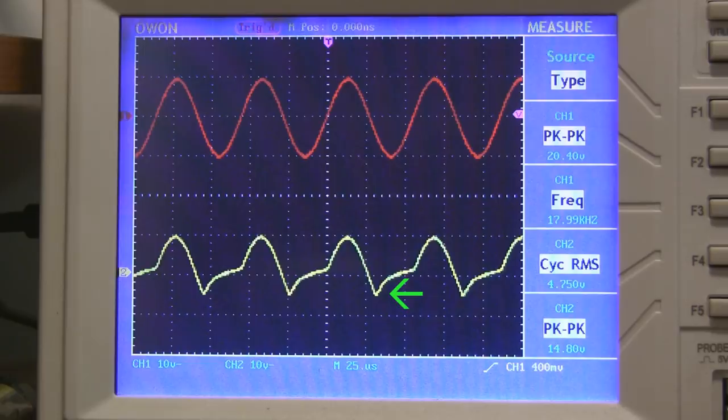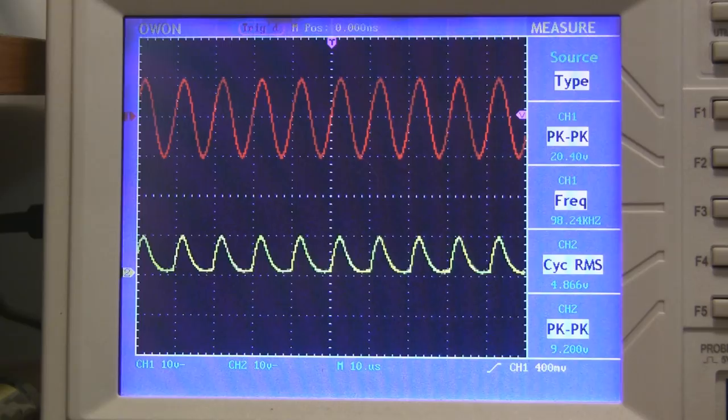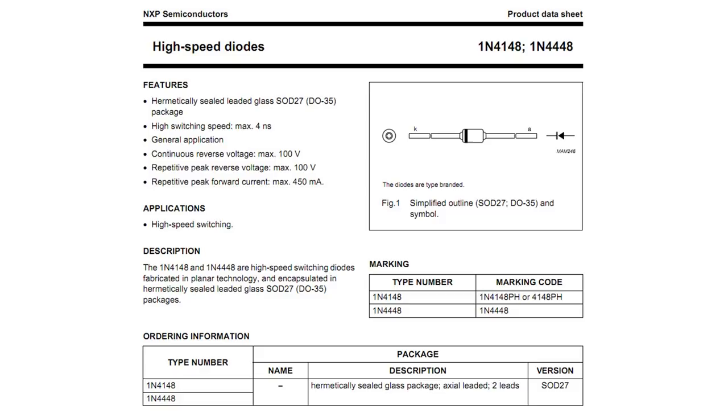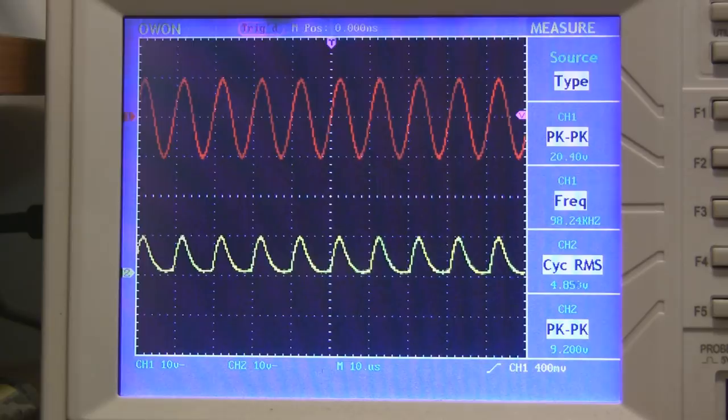This is because it takes a certain amount of time for the diode to switch between allowing current to move forwards to blocking any current trying to move backwards. Different diodes will have different switching speeds, so if I replace the 1N4007 with a 1N4148, things work nicely all the way up to 100 kHz and beyond. For radio frequency applications, you'll want diodes that switch even faster.